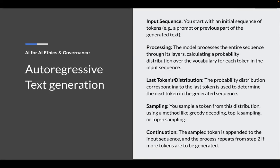So what is autoregressive text generation? These models really are just predicting — the base model is really just predicting the next word in a sequence of words, or the next token. And in order to generate the text that we see, it has to iteratively go through this process.